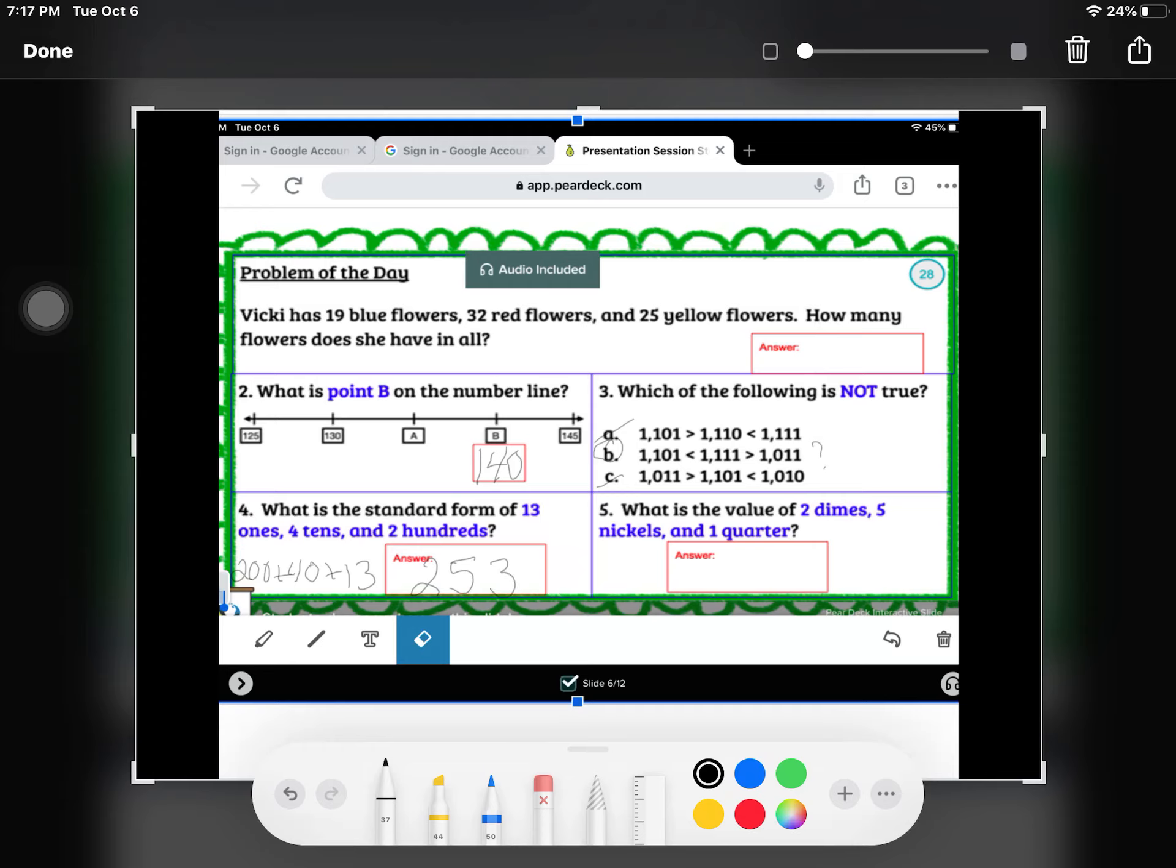What is the value of two dimes? That's 10, 10. And five nickels? That's one nickel, two nickels, three nickels, four nickels, five nickels, and one quarter. If we put those all together, we start with the largest.